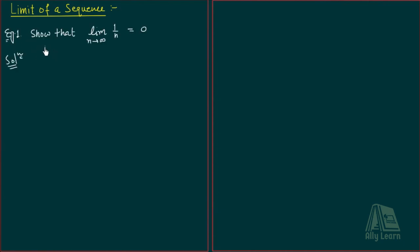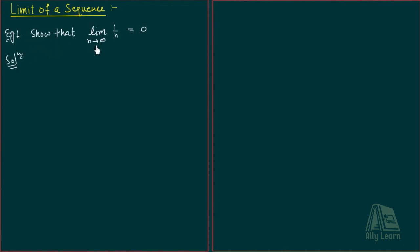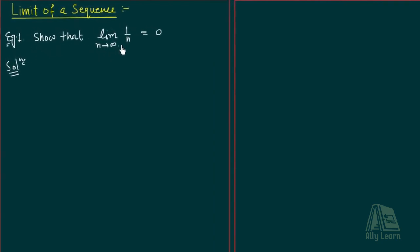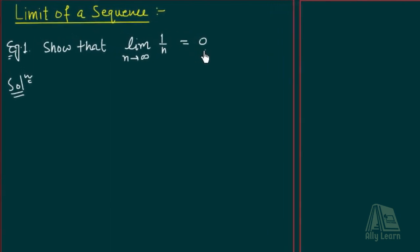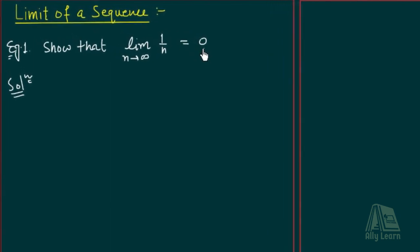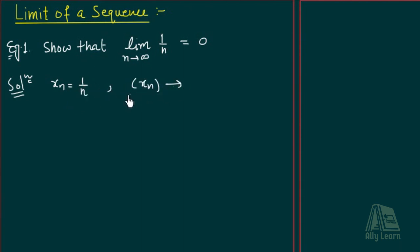At Example 1, hamne show karna hai: limit as n tends to infinity of 1/n equals 0. Yianni, agar ham xn equals to 1/n lye, to humme kya show karna hai — the sequence xn tends to 0. That is, 0 is the limit of the sequence xn.